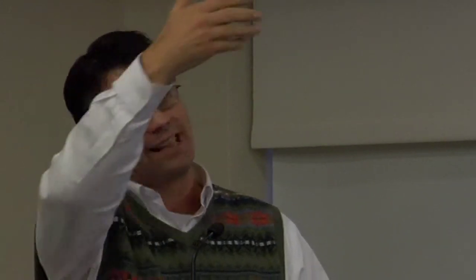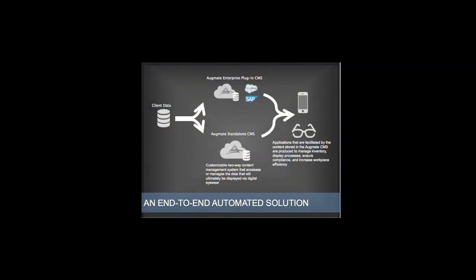It does that with database services, and then there's an Android application that runs on the digital eyewear. Our team creates templates with fields that bring in information from the databases. For example, you'd be able to have an enterprise software like SAP's warehouse solution running on a server and bring that down to a warehouse picker wearing digital eyewear.